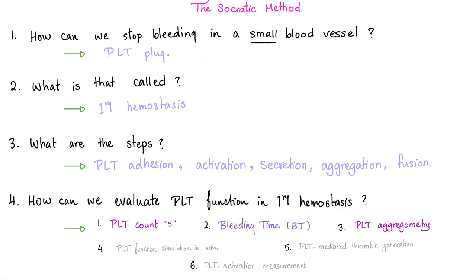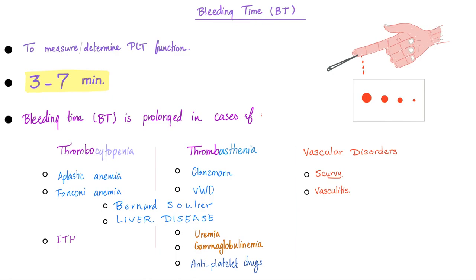Some Socratic dialogue: how can we stop bleeding in a small blood vessel? You need a platelet plug — this is primary hemostasis. The steps are adhesion, activation, secretion, aggregation, and fusion of the platelets. To evaluate platelet function, you need platelet count, bleeding time, and platelet aggregometry. Bleeding time for platelet function is becoming outdated — it has many limitations including skin thickness and the site of the test — so we need a better, more sophisticated way: platelet aggregometry.